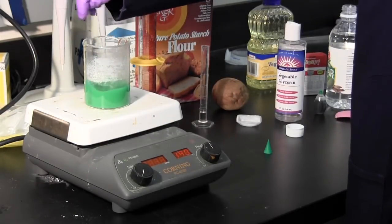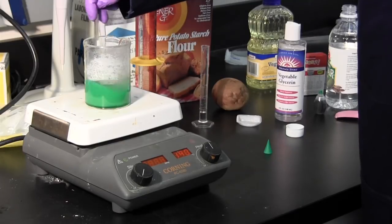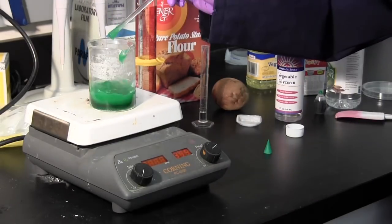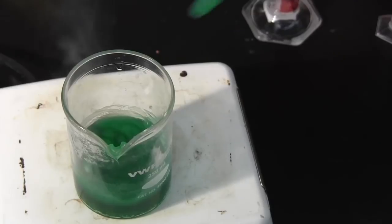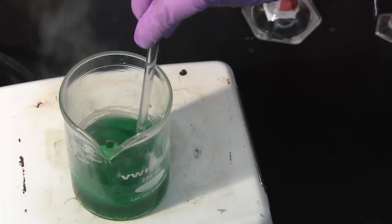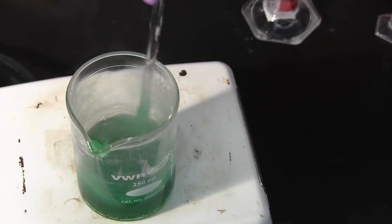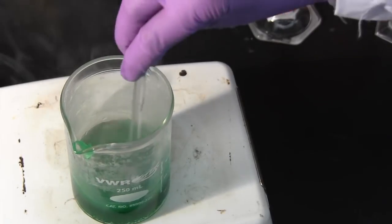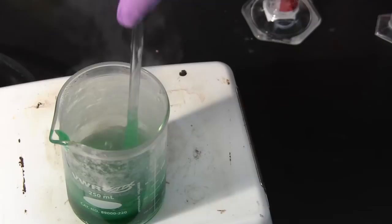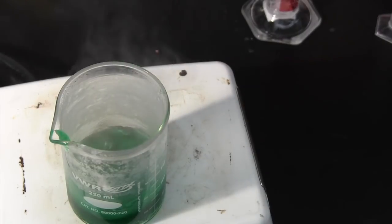Once it finally thickens allow the solution to boil on medium-high heat for another five minutes. You can see how the solution has darkened a lot and has become very thick and hard to move around. Allow the mixture to cool for a couple minutes so it's easy to handle.